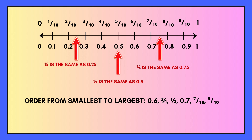Next question. Try ordering the following decimals and fractions from smallest to largest. Pause the video while you work out your answer. You need to order: 0.6, three quarters, one half, 0.7, seven tenths, and five tenths.